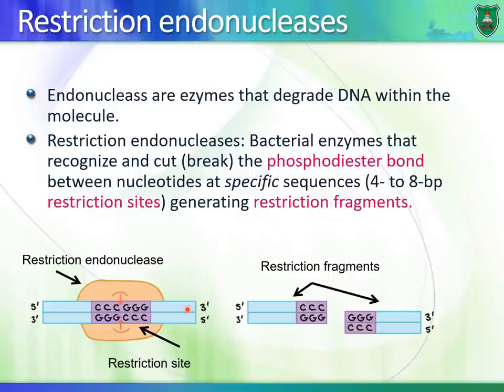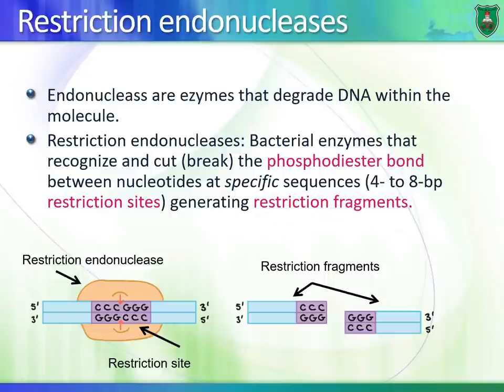Restriction endonucleases recognize a specific sequence called a restriction site, usually about four to eight nucleotides long. They cut within these sites, resulting in the formation of restriction fragments. For example, one restriction endonuclease recognizes the sequence C-C-C-G-G-G specifically and cuts the DNA within that restriction site.